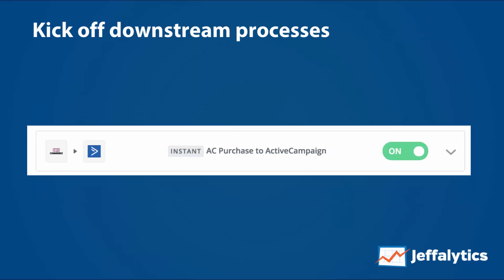We also kick off downstream processes. When somebody buys, we put them into the onboarding sequence to let them know about the materials in the course. This works for ActiveCampaign. But when we use Drip integrated with WooCommerce, we have the ability to kick this off without using Zapier at all — which is nice because it doesn't go against our rate limits and works even better than using an intermediary like Zapier.